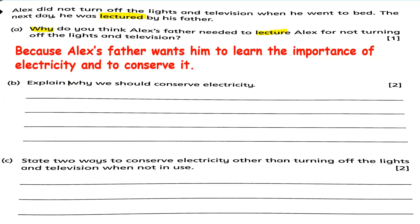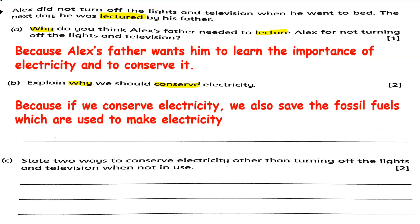Letter B: Explain why we should conserve electricity. Because if we conserve electricity, we also save the fossil fuels which are used to make electricity. Fossil fuels are non-renewable sources of energy which take millions of years to produce again. So saving electricity is also saving fossil fuels, and we can also save money as well.